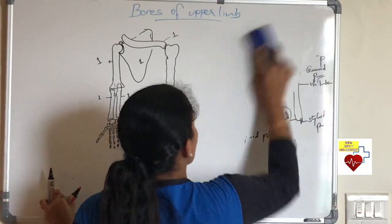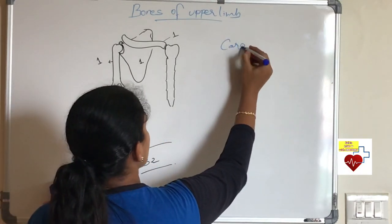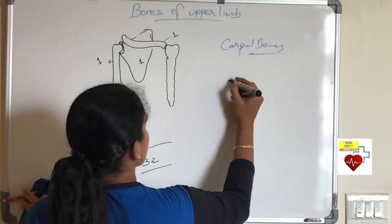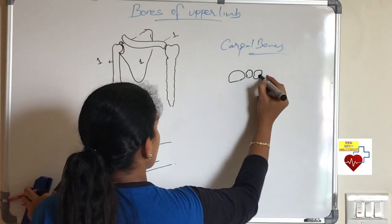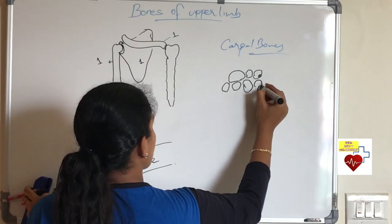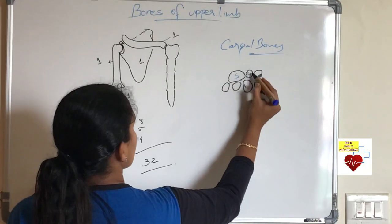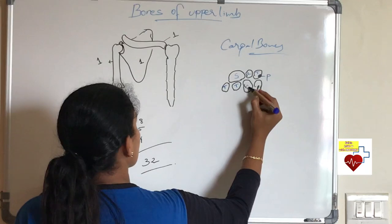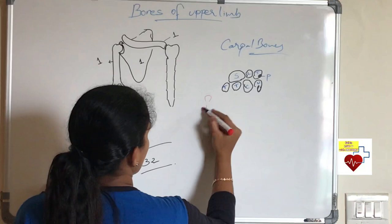Next moving on to carpal bones. What are these small pebble-like bones? They are eight in number in upper limb. You should know the names of all carpal bones. I have drawn seven prominent bones and one dot there which is pisiform bone. So you have scaphoid, lunate, triquetral, pisiform, trapezium, trapezoid, capitate, hamate.